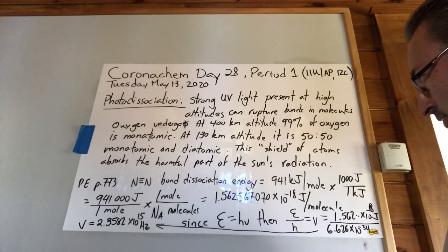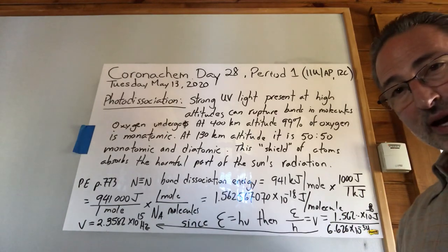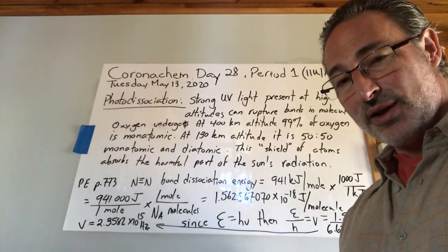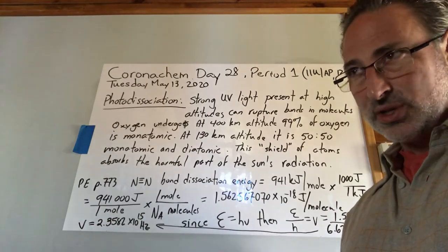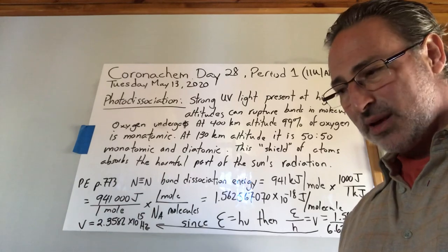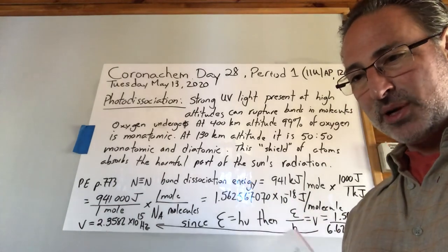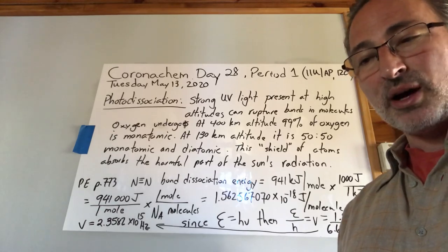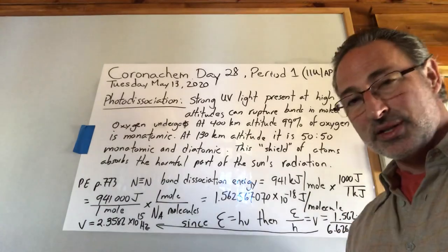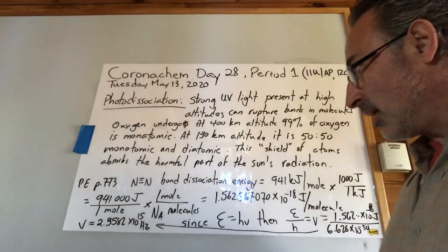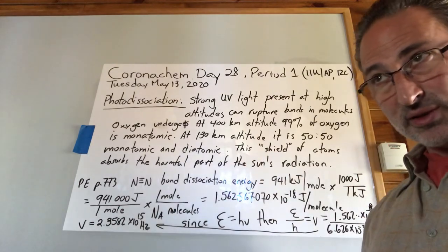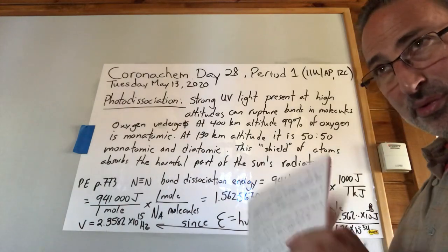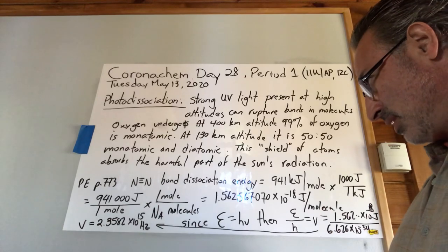At 130 kilometers altitude, there's about a 50-50 ratio of monatomic and diatomic oxygen. As you know, oxygen is usually a diatomic molecule, but if a photon of sufficient energy hits that bond, it can cause the bond to rupture and you get what's called a radical mechanism. You get a single unpaired electron bonding to one oxygen and the other one bonding to the other oxygen. So you get monatomic oxygen, which is quite reactive. But in the meantime, it has absorbed that photon of energy, which if it hit something on the surface of the earth, it would cause damage. So this shield of atoms at the upper reaches of the atmosphere absorb the harmful part of the sun's radiation.